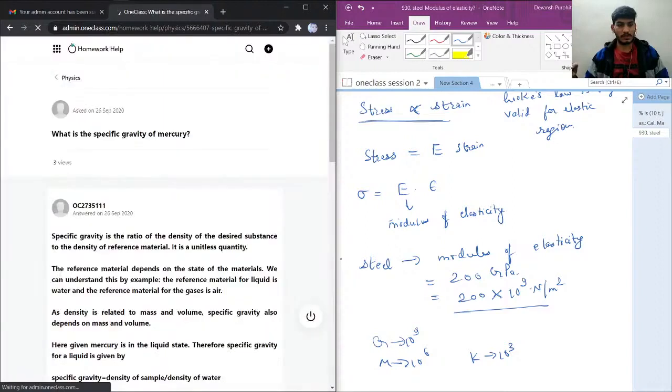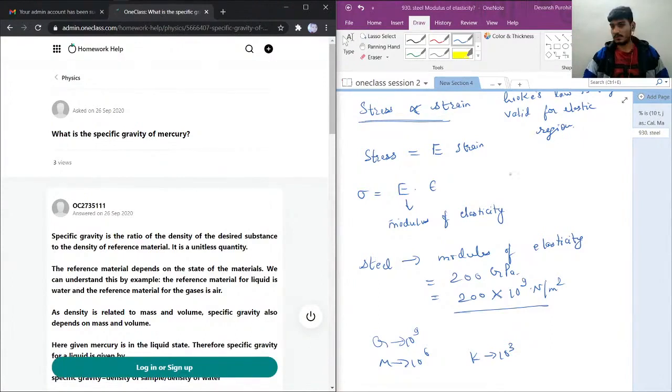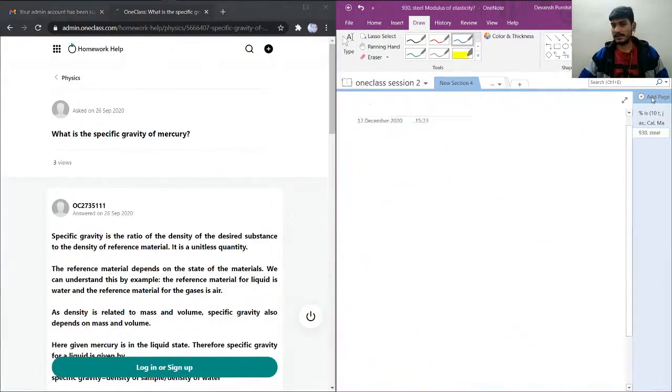Let's go to another question. This was question number 3. I'll just go to question number 4. So here it is asking what is the specific gravity of mercury.